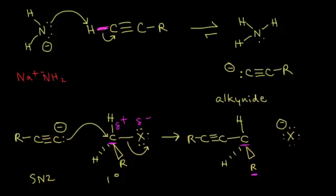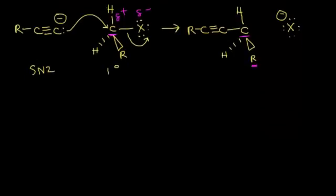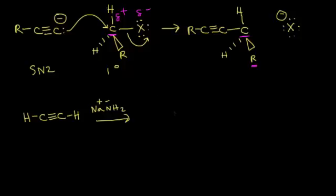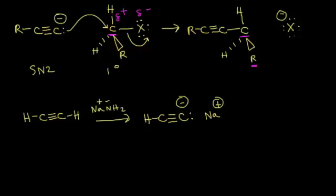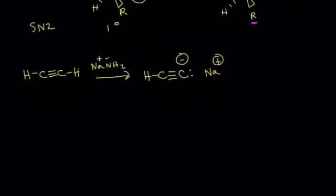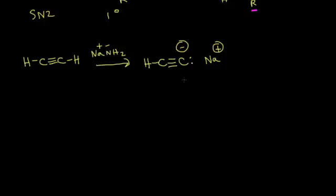Let's look at an example. Starting with acetylene — the simplest alkyne, H–C≡C–H — if we react it with one molar equivalent of sodium amide, that strong base takes off one of the acidic protons. We lose the proton on the right, leaving two electrons behind on that carbon making it negatively charged. The sodium cation interacts with the negatively charged carbanion, forming the alkynide anion. Then in a second step, we react with ethyl bromide, CH₃CH₂Br.